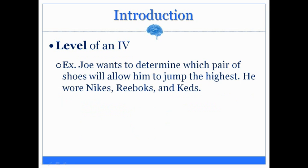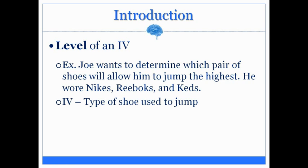Allow another example to clarify. Joe wants to determine which pair of shoes will allow him to jump the highest. He wore Nikes, Reeboks, and Keds. So what is the independent variable? What is being manipulated? That is the type of shoe that he wore. What groups make up that independent variable? It consists of three: the Nikes, the Reeboks, and the Keds. So this independent variable consists of three levels, and only three.